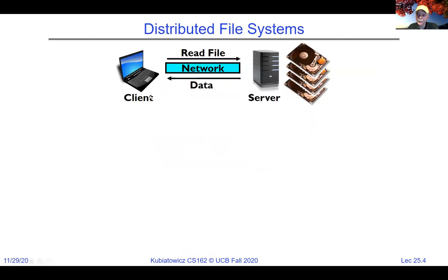A distributed file system is simple: we have a laptop and a server that actually has the data. Instead of local file systems we've been discussing, you're actually sending your request to read and the response comes back over the network. The server is a separate node from the client using it.